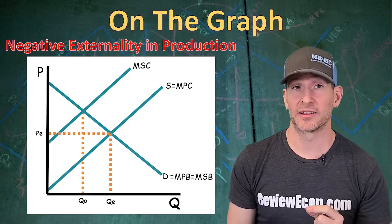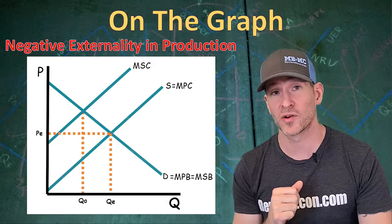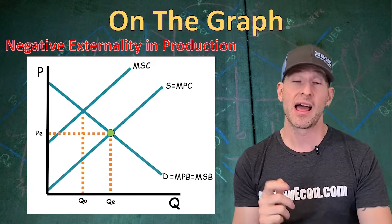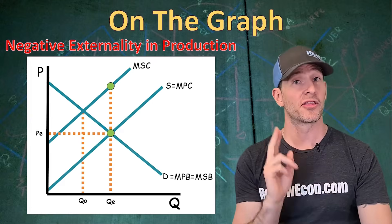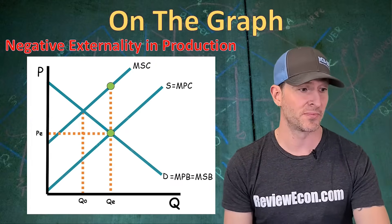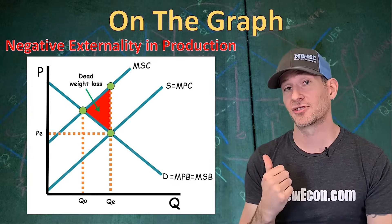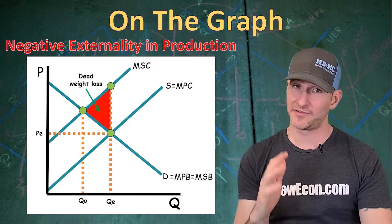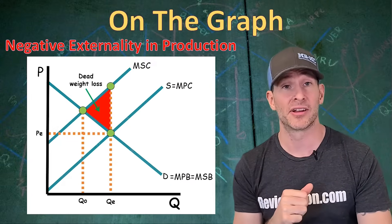Without government intervention we won't be at the allocatively efficient quantity — we'll be at the equilibrium quantity, which means we have deadweight loss. We find that deadweight loss using three points: from the current market quantity, find the true marginal social benefit, then go up to find the marginal social cost — those are two points. The third point is where marginal social cost equals marginal social benefit. The deadweight loss triangle always points to the allocatively efficient quantity QO, and if we had numbers we could calculate its area.